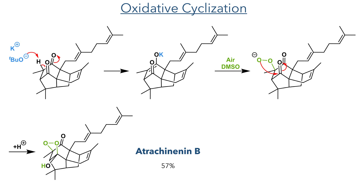With the carbon framework now complete, all that remained to complete the synthesis of Atrojenenon B was an oxidative cyclisation. This was carried out by first forming an enolate with potassium tert-butoxide, and then reacting this enolate in DMSO with oxygen present in the air. This forms an organic peroxide that can then undergo an intramolecular addition to the carbonyl, forming the endoperoxide in a 57% yield to complete the synthesis of Atrojenenon B.